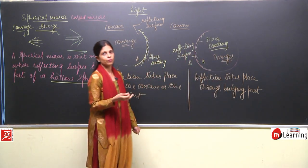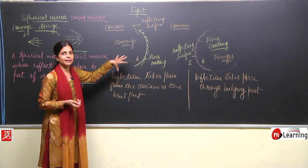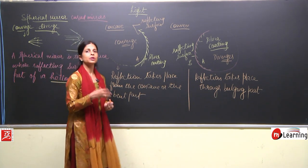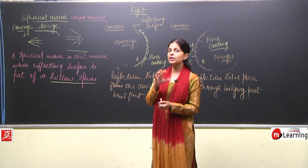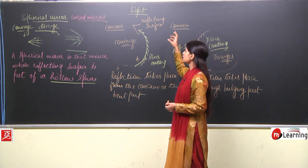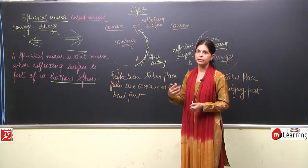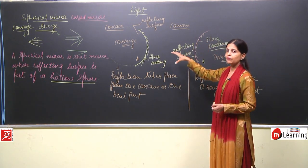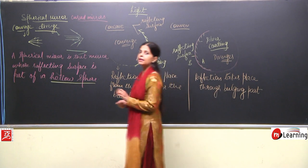We need to prove how these mirrors are known as converging or diverging. But before discussing that, we need to know certain new terms like center of curvature, principal axis, pole, and aperture. Only then will we be able to understand how light rays get converged or diverged. The first aim was to make you understand that these mirrors are the part of a hollow sphere.